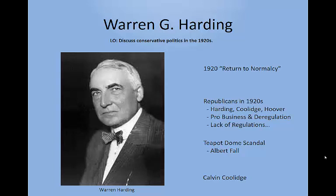Coolidge took over as vice president and won election in 1924. He continued Harding's policy of limited federal government, deliberately avoiding what he called an 'activist presidency,' unless it meant helping business — often at workers' expense. He continued installing business supporters as regulators, a classic 'fox guarding the hen house.' After Coolidge, Hoover was elected in 1928, who we deal with more in the chapter on the Great Depression.